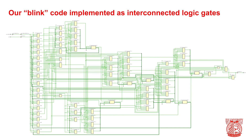To further push forth the idea that we're not programming software, here is our blink code implemented as interconnected logic gates within our FPGA. This is the actual outcome of what you would consider to be the compiling step of our Verilog code — it creates these interconnected logic circuits within the FPGA. To the left-hand side you can see two inputs: our clock input and our reset line input. To the far right we see blinky, our output that goes to the LED.